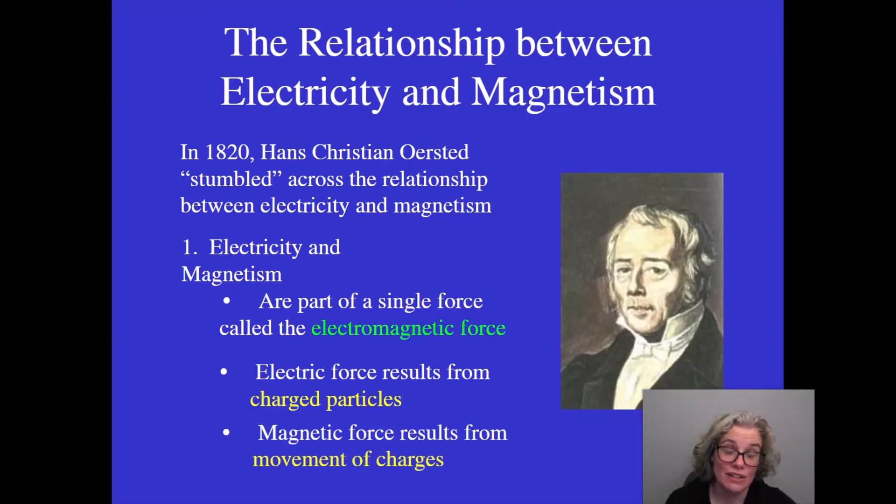All materials have electrons moving in them. Magnetic materials are special in that the electrons are all moving, spinning in the same way. And that's what causes them to be magnetic. To learn more about that, please watch this video about magnetic domains.